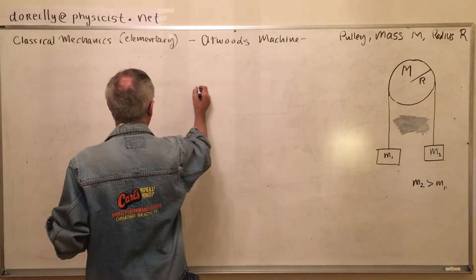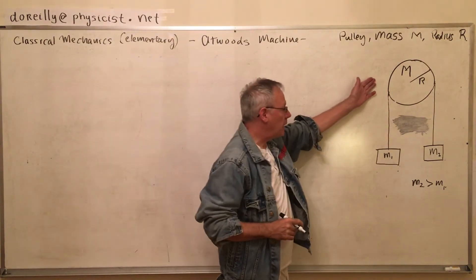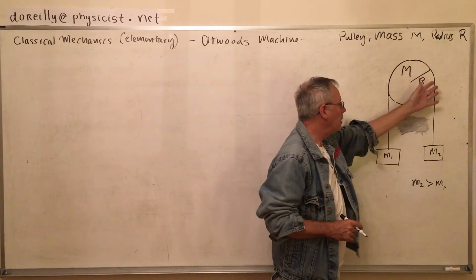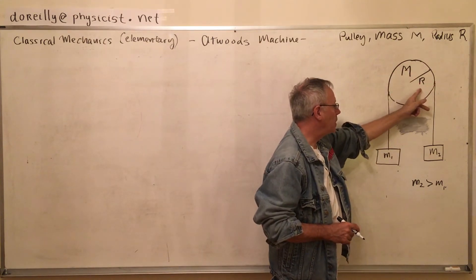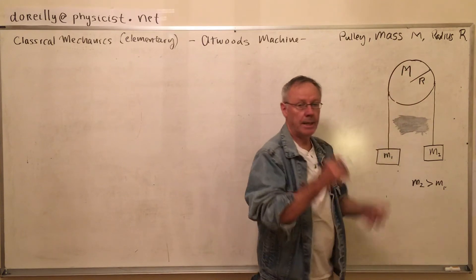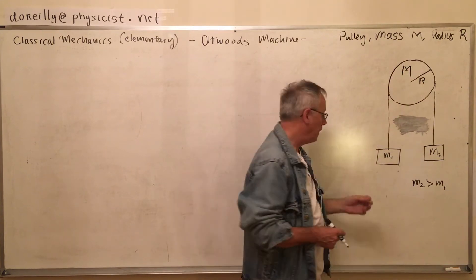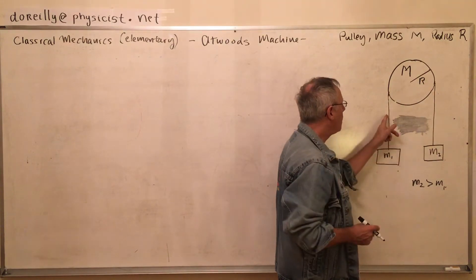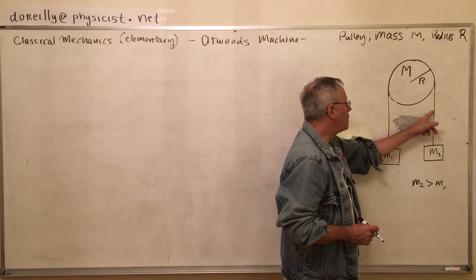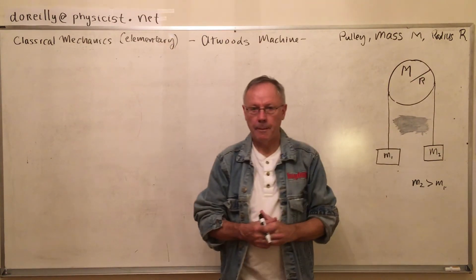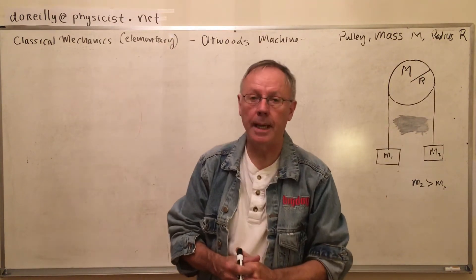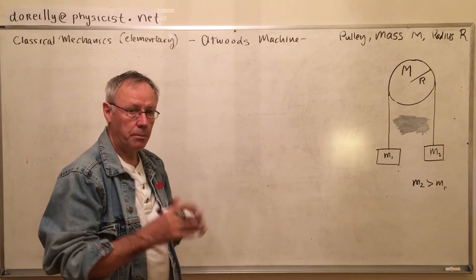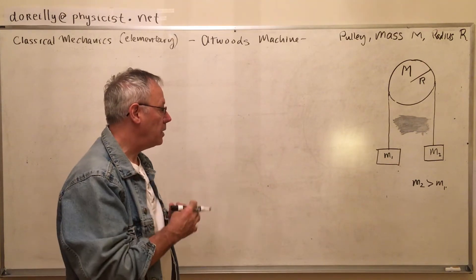For example, this is the way Atwood's machine looks in its simplest form. We have a pulley — it could have a mass m and a radius r, or it could be a massless pulley made out of styrofoam. Two masses are hanging on it and they're free to move. Now the ropes do not slip — that's an important idea. If the ropes slip, there's a different component to be dragged into the equation.